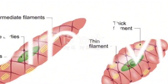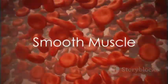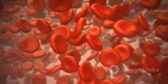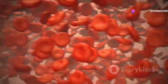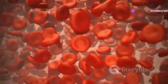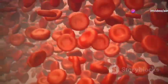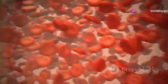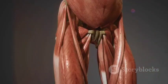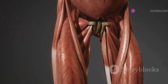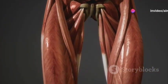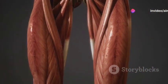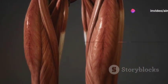Lastly, there's smooth muscle. This type of muscle tissue is found in various organs and structures throughout the body, including blood vessels, the digestive tract, and the respiratory system. Unlike skeletal and cardiac muscle, smooth muscle lacks striations, giving it a smooth appearance under a microscope. It's responsible for involuntary movements such as peristalsis in the digestive system and vasoconstriction in blood vessels.